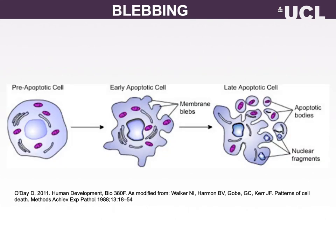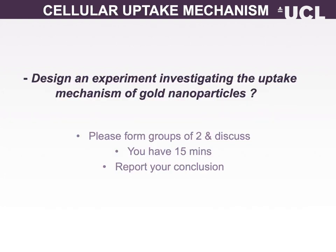Blebbing of the plasma membrane is a morphological feature of cells undergoing late-stage apoptosis, which is programmed cell death. A bleb is an irregular bulge in the plasma membrane caused by localized decoupling of the cytoskeleton from the plasma membrane. The bulge eventually blebs off from the parent plasma membrane, taking part of the cytoplasm with it. The plasma membrane of an apoptotic cell is highly disintegrated and has lost the integrity required to maintain essential transmembrane gradients. Blebbing also occurs in some normal cell processes, including cell locomotion and cell division. Please get into groups of two and discuss how you can design an experiment investigating the uptake mechanism of gold nanoparticles. You have 15 minutes and report your conclusions.